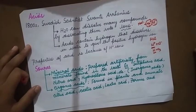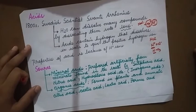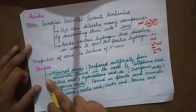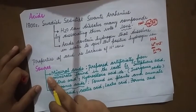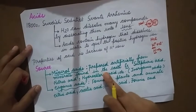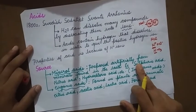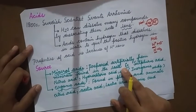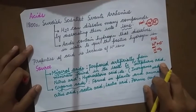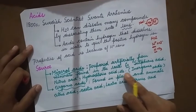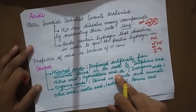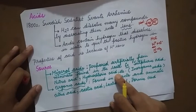What are the sources of acids? One source is mineral acids, which are prepared artificially from minerals found in the earth. Examples are sulfuric acid, nitric acid, and hydrochloric acid. These are also known as inorganic acids, and all are prepared artificially or man-made.